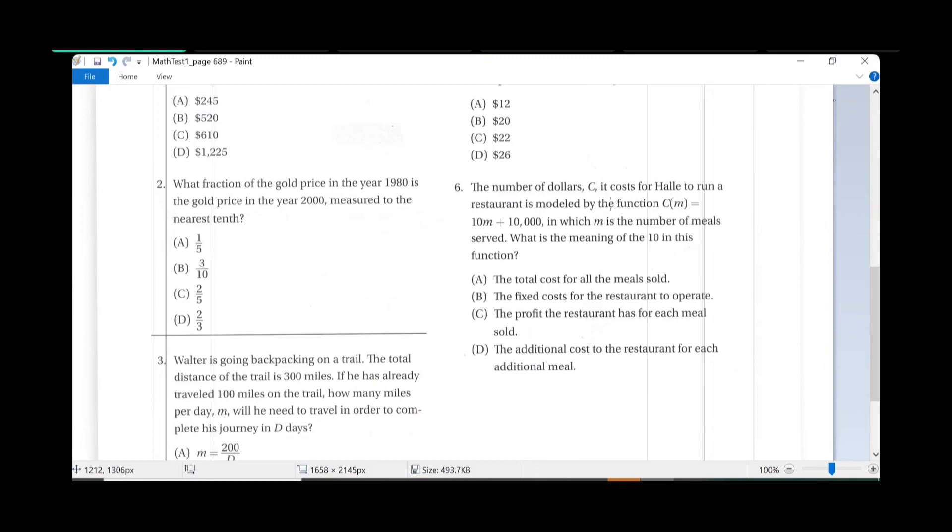The number of dollars c it costs for Harry to run a restaurant is modeled by the function c of m equals 10m plus 10,000, in which m is the number of meals served. What is the meaning of 10?